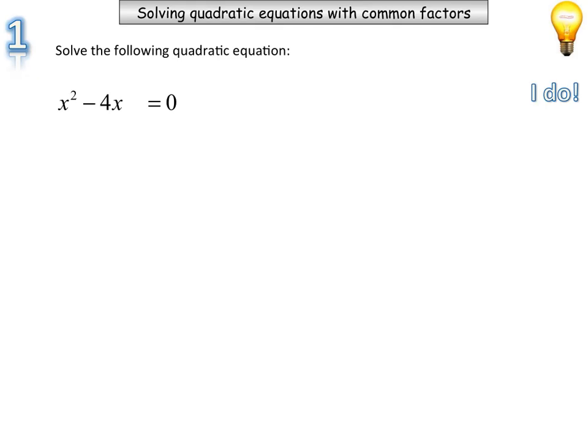OK, so question 1 says solve the following quadratic where it says x squared minus 4x is equal to 0. So what solution will we get?